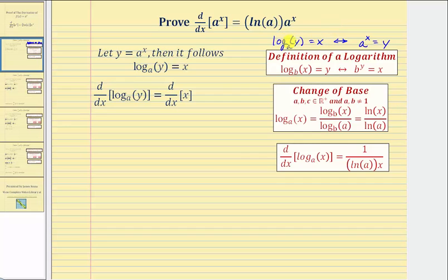Now we'll use this equation to find the derivative of y with respect to x, because y equals a raised to the power of x. We have the derivative of log base a of y with respect to x is equal to the derivative of x with respect to x. Notice on the left side, because we have a term containing y, we have to perform implicit differentiation, so we'll have an extra factor of dy/dx due to the chain rule.